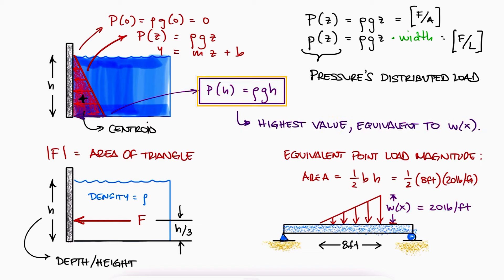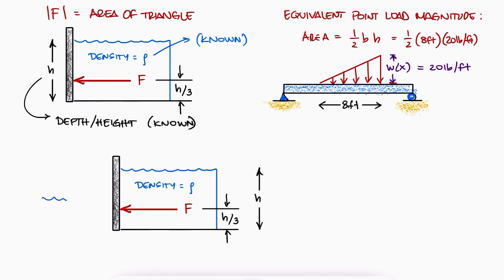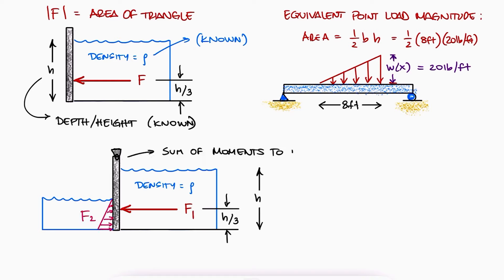Since the pressure is rho gh, by knowing the depth we know h, and by knowing the liquid — for example water — we know rho, its density. The reason for calculating these hydrostatic pressure forces is to be able to calculate the reaction moment or forces that, for example, a gate has to generate to prevent the water from coming into the adjacent reservoir.